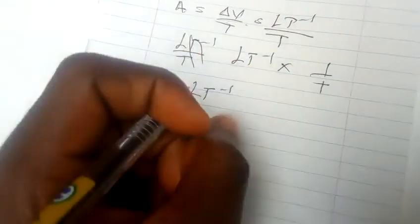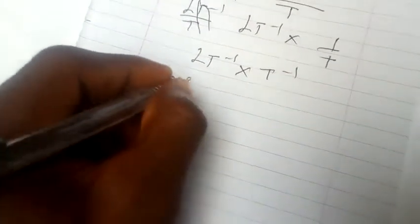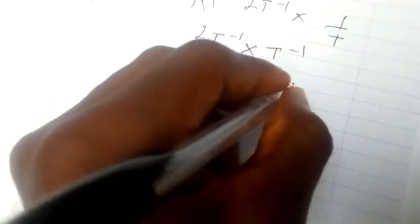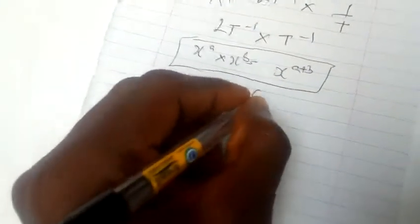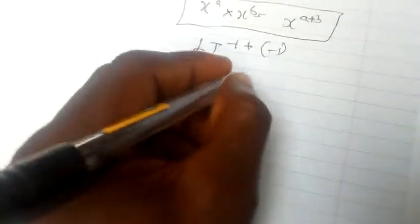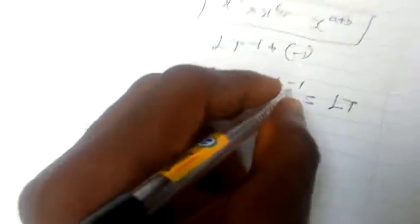We still apply the law of indices, which is X to the A multiplied by X to the B equals X to the A plus B. Applying it here, we get L T minus one plus minus one, so it will be L T minus one minus one, which is L T minus two. This is the dimension for acceleration.